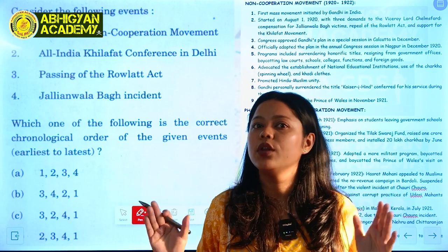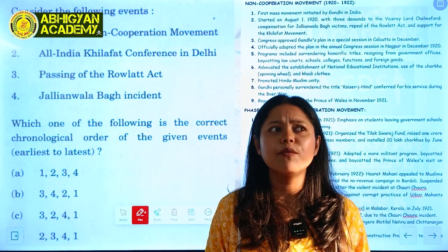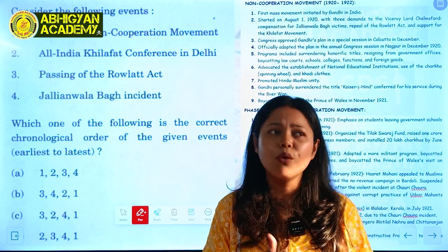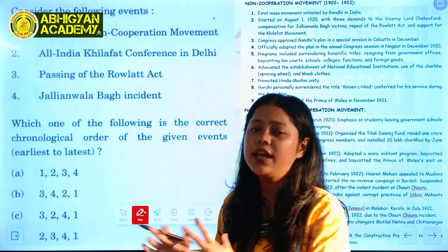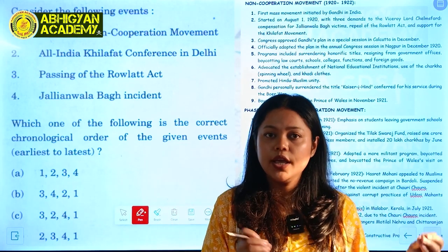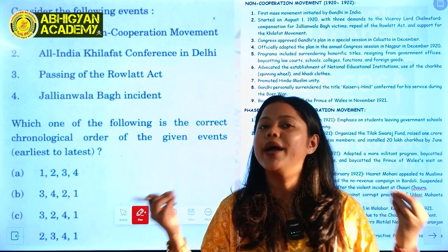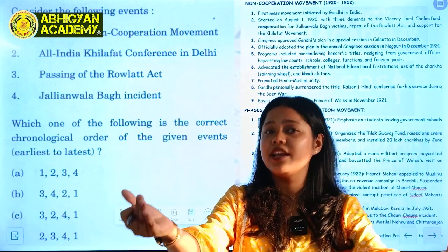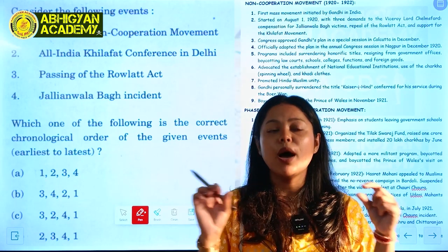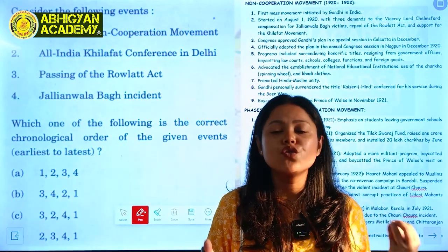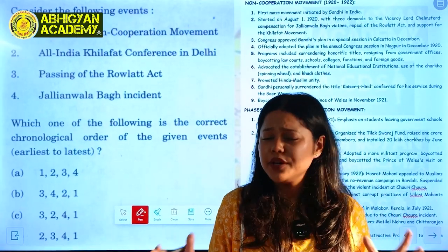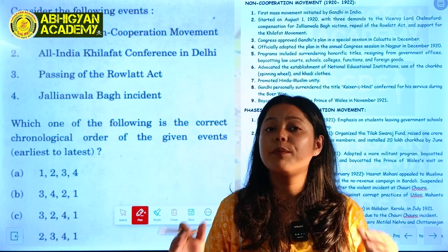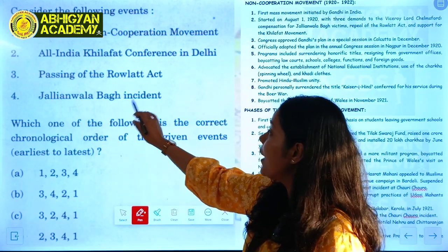Gandhi wanted to start a Rowlatt Satyagraha against this unjust act, but curfew was imposed at that time. People in the countryside were unaware of the curfew. During Baisakhi in Amritsar, people gathered at Jallianwala Bagh — some to celebrate, some to protest. The commander General Dyer ordered his army to open fire, and thousands of people were killed. This is known as the Jallianwala Bagh incident.